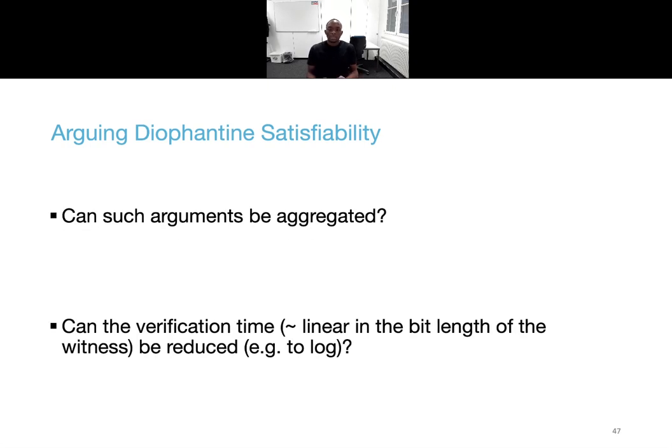As closing remarks, it might be worth investigating whether such arguments can be aggregated to, for instance, argue knowledge of several signatures at once. And also if the verification time, which is for now linear in the bit length of the witness, can be significantly reduced and this could have potentially many other applications in different contexts. That's it for this presentation. Thank you for your attention and please feel free to send us an email should you have any questions.